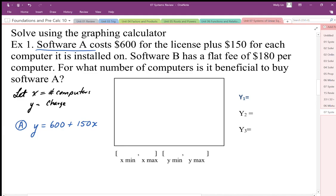For Software B, we have a flat fee of $180 per computer times the number of computers. So there are our two relationships. If we graph these, I'm going to put them in y equals form, mx + b. For the second equation, y equals mx where b equals zero, and we can then graph to see the solutions.